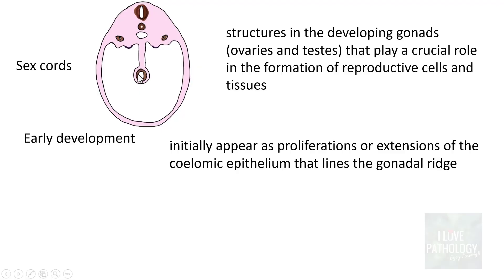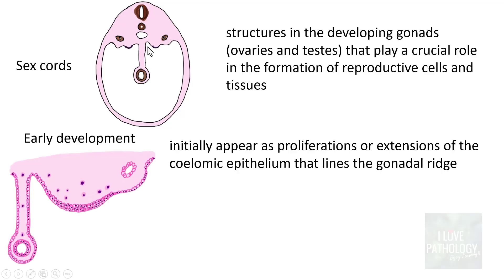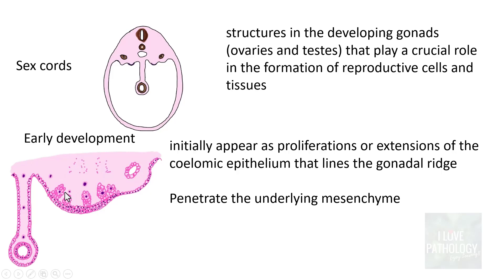Looking at a section of the embryo, we can see the primitive gut, the notochord, and the genital ridge. This thickening is the genital ridge, which is medial to the mesonephros - where the kidneys would develop. Histologically, this region is lined by coelomic epithelium, which in the genital ridge is thickened. Sex cords appear as proliferations of this coelomic epithelium penetrating into the underlying mesenchyme. The small round dots represent germ cells migrating toward the developing gonad.